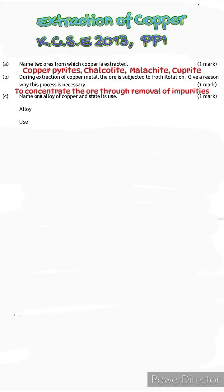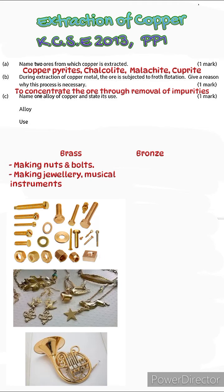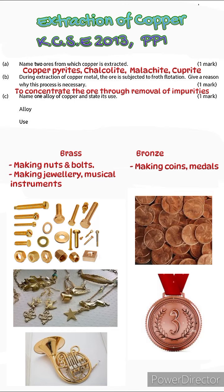Moving on to part C: Name one alloy of copper and state its use. Copper has two alloys: brass and bronze. Brass is used in making nuts and bolts, jewelry, and musical instruments. Bronze, on the other hand, is used in making coins, medals, etc.